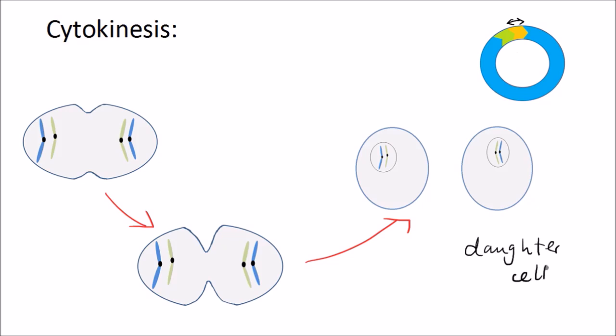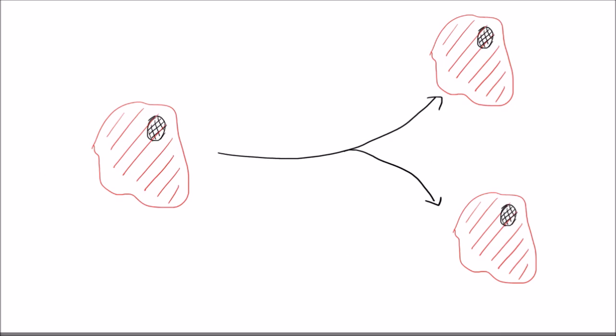And if you remember, the original cell was called the parent cell. So we have a parent cell and we have daughter cells. So here we can see the cell membrane and the cytoplasm dividing and splitting and finally separating into two individual cells. So that was the cell cycle.